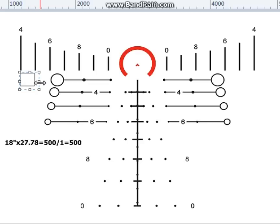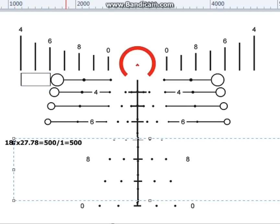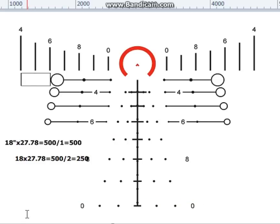Obviously, as things get closer, they get bigger. If this target was two mils, you would divide by two. So 18 times 27.78 equals 500 divided by two, you would end up with 250. So this target would be 250 yards away, and so on.